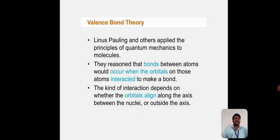They researched that bonds between atoms would occur when the orbitals on those atoms interacted to make a bond. The kind of interaction depends on whether the orbitals align along the axis between the nuclei or outside of the axis.